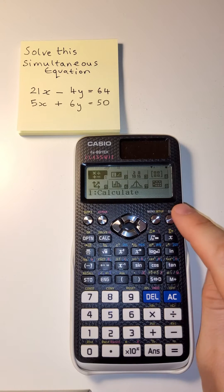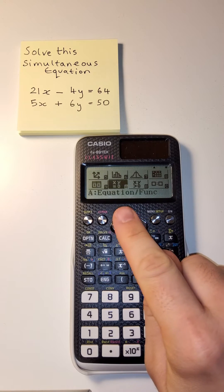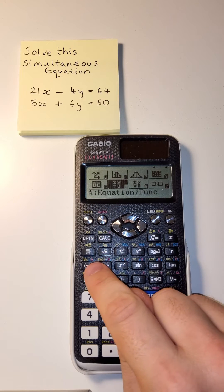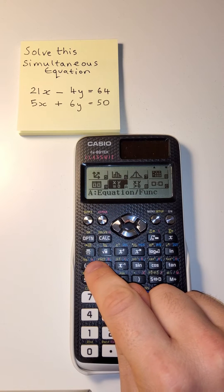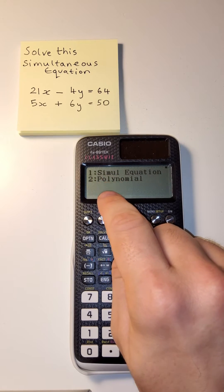Go to the menu button by pressing the menu and down to the equation function which you'll notice is A. We can get straight there by using the A key there. Press equals to go in and we have two options.